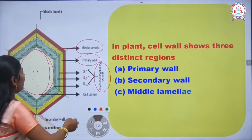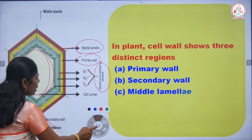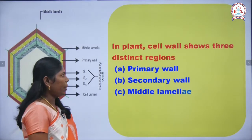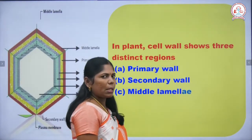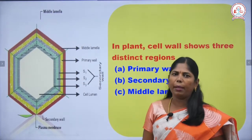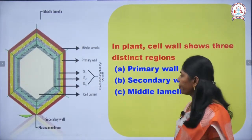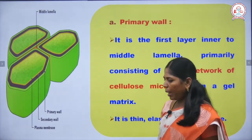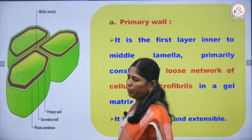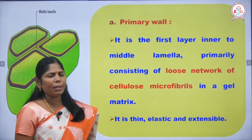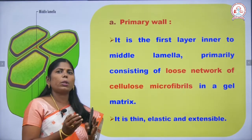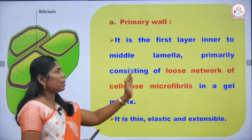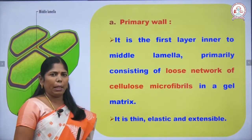The three distinct regions in the plant cell wall are the primary wall, secondary wall, and middle lamella. The primary wall is present next to the middle lamella — it is the first layer inner to the middle lamella.